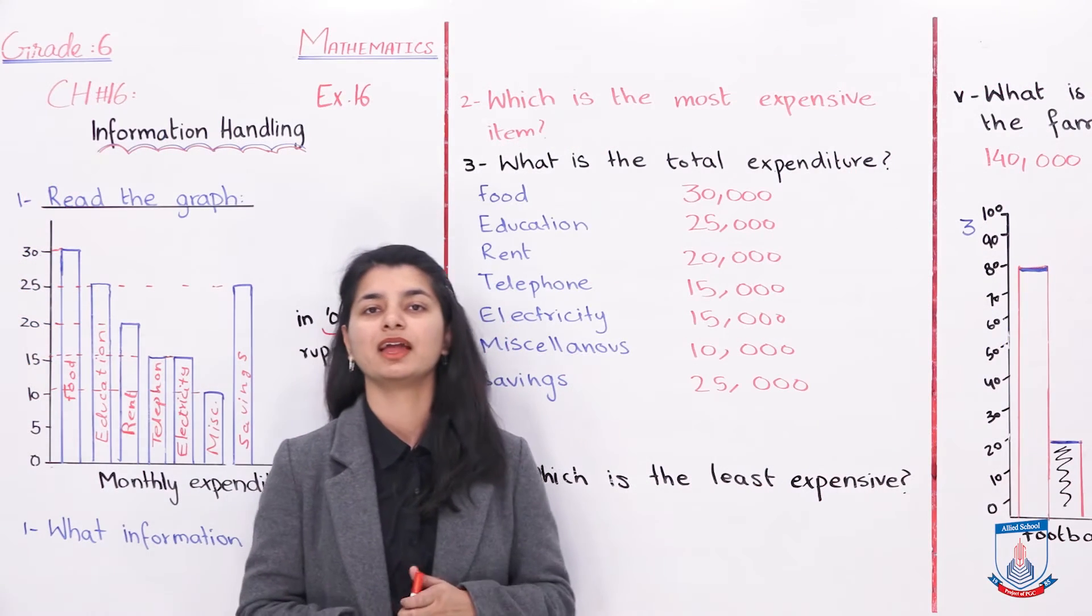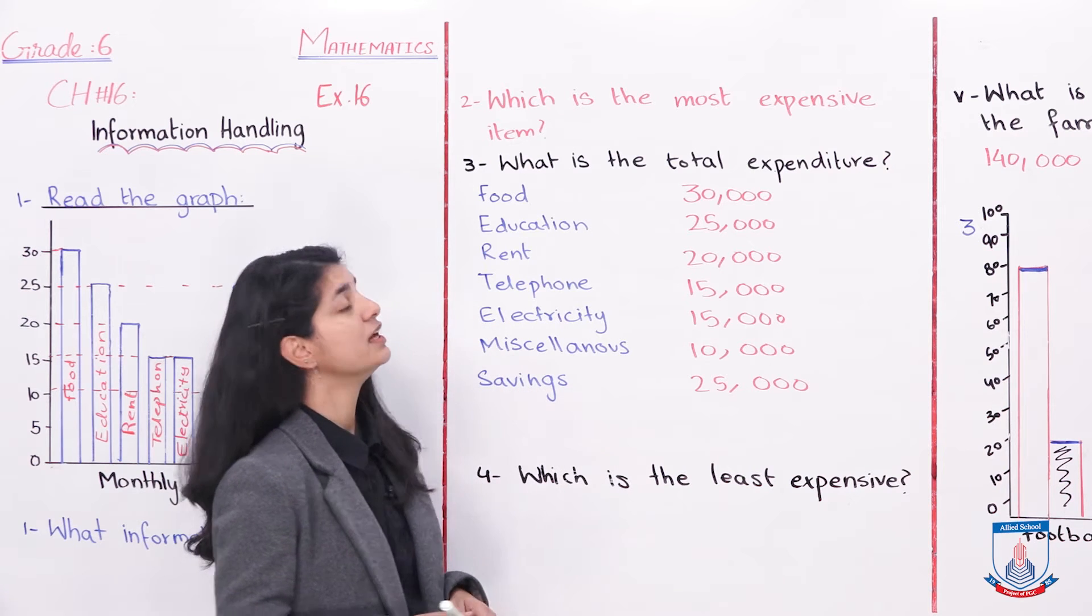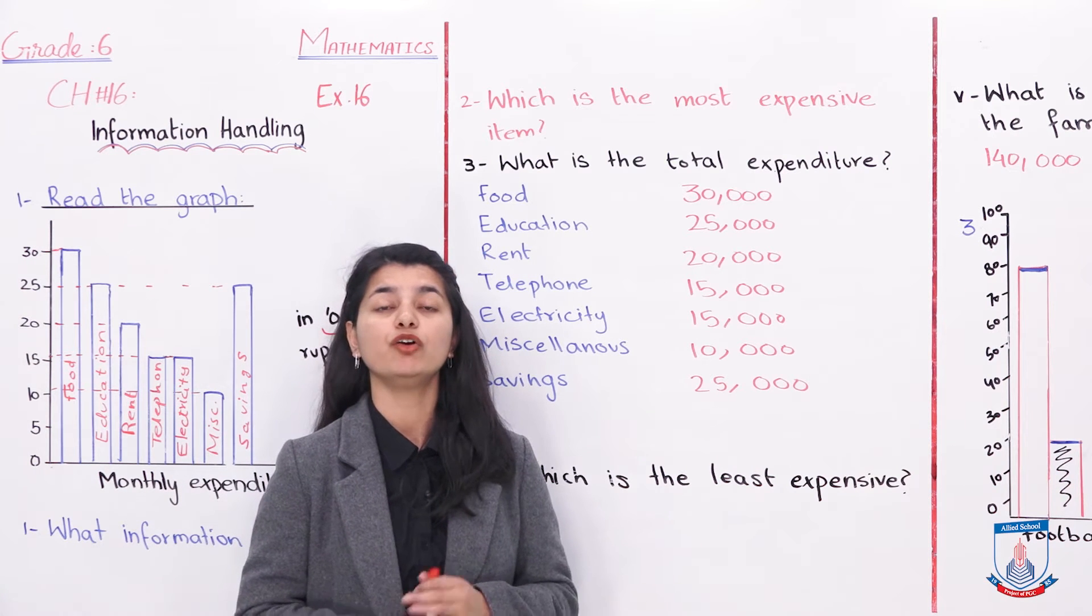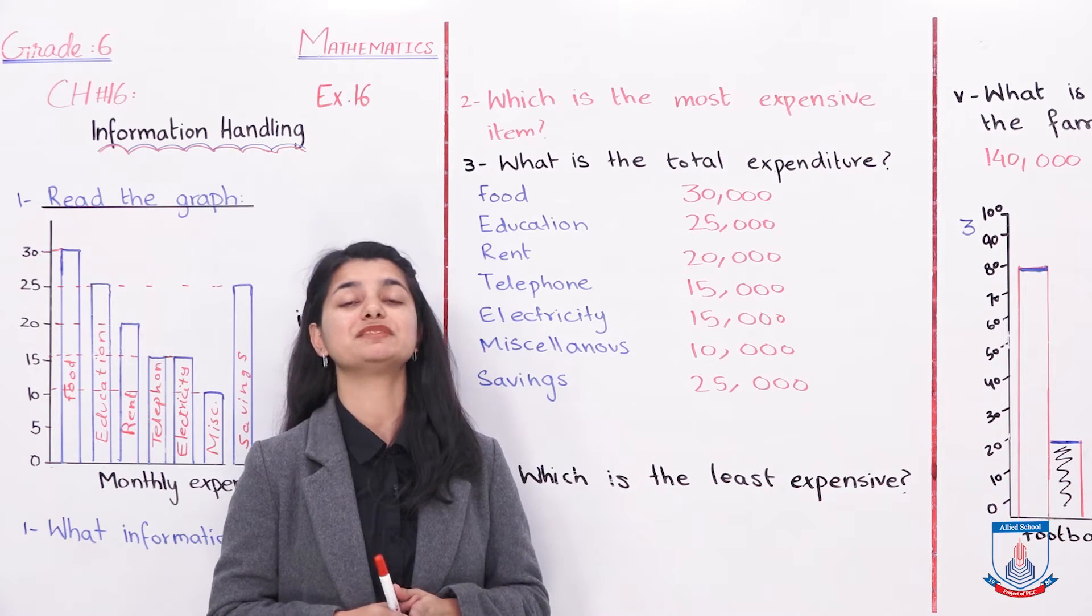Your answer to the first part is: this graph gives information about the monthly expenditure of a family. Now, the second question: which is the most expensive item? The most expensive amount of money is the most expensive item.